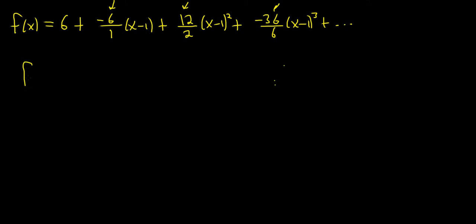Let's clean it up a little bit. So f of x is equal to 6 minus 6 times x minus 1, plus 6 times x minus 1 squared, minus 6 times x minus 1 cubed, plus dot dot dot. So I think now we can find a pattern.